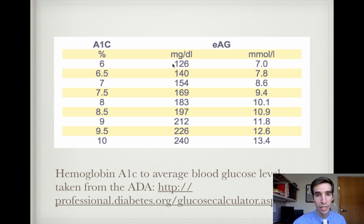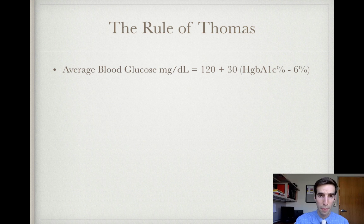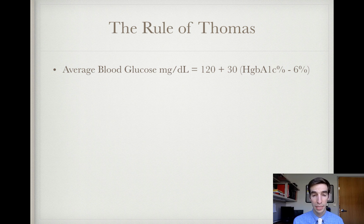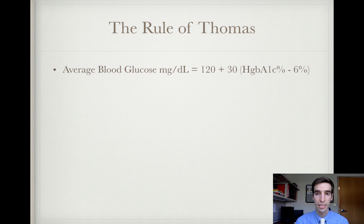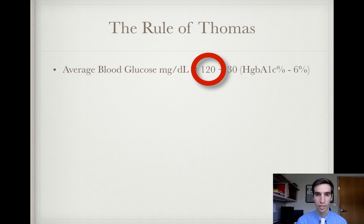A hemoglobin A1c of 6% is roughly 126 milligrams per deciliter, so I created the Rule of Thomas. The formula is: average blood glucose in milligrams per deciliter equals 120 plus 30 times (hemoglobin A1c minus 6%). Remember the order of operations: start with your hemoglobin A1c, subtract 6%, multiply by 30, then add 120. This 120 serves as a kind of baseline blood sugar.